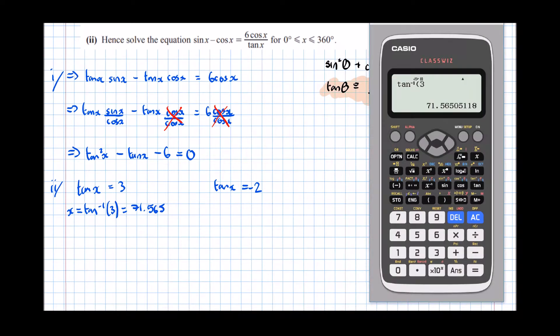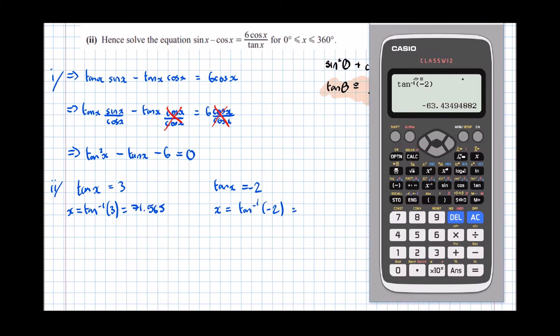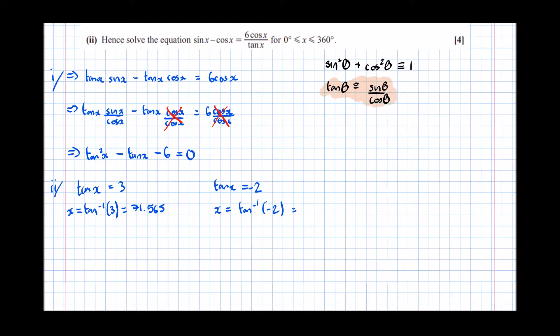And the other one, the inverse tan of minus 2, which is minus 63.435. So x equals the inverse tan of minus 2, which was equal to minus 63.435.